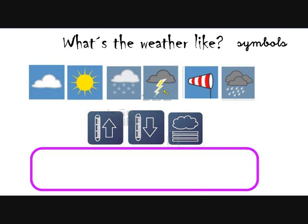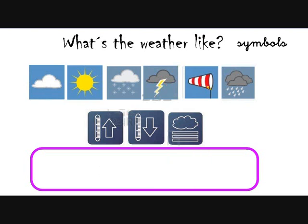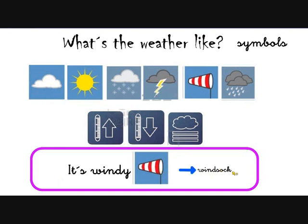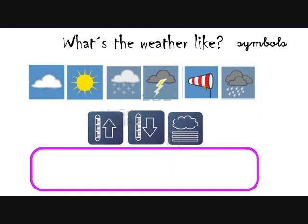What about this one? This is a tricky one. We see some lightning coming down from the dark cloud. This is stormy. What about this symbol? It's new. It is windy. And this thing here is a windsock. So when the windsock is full, it means that it's very windy. So, windy.